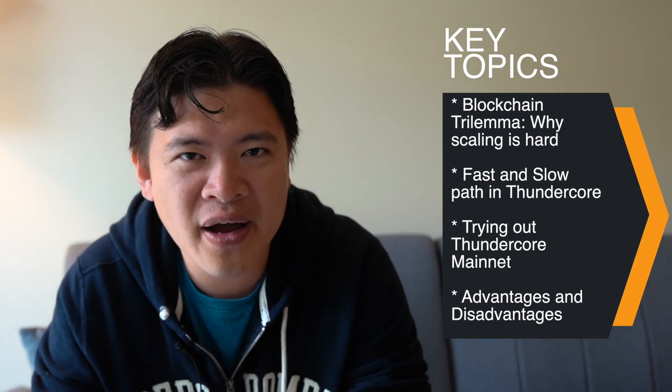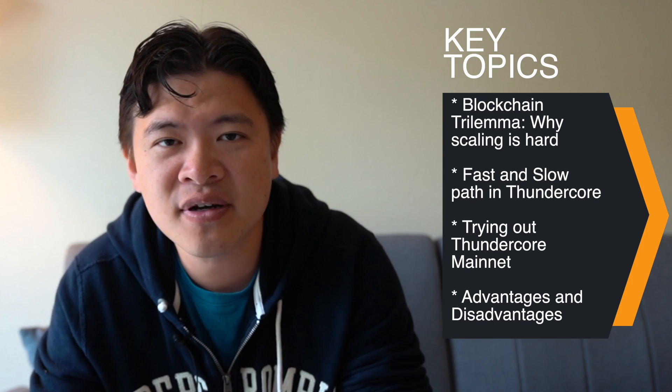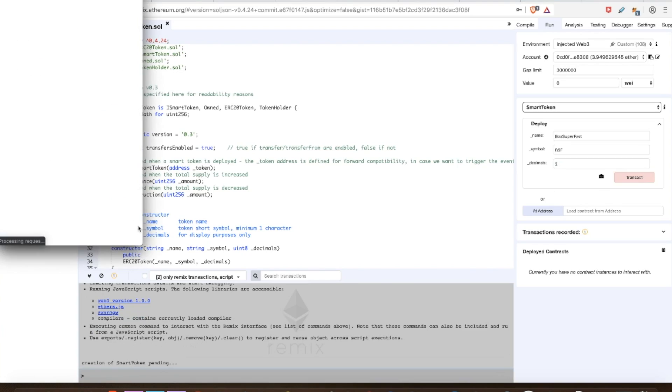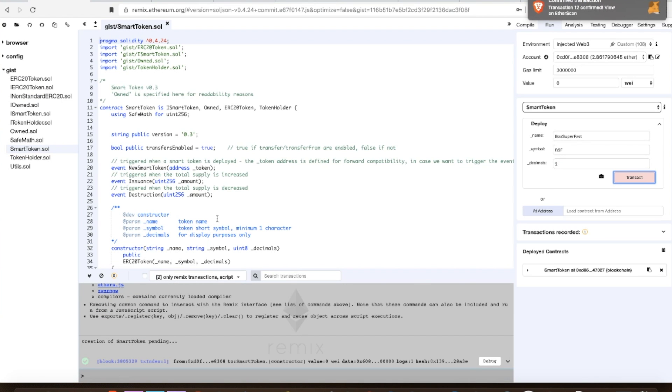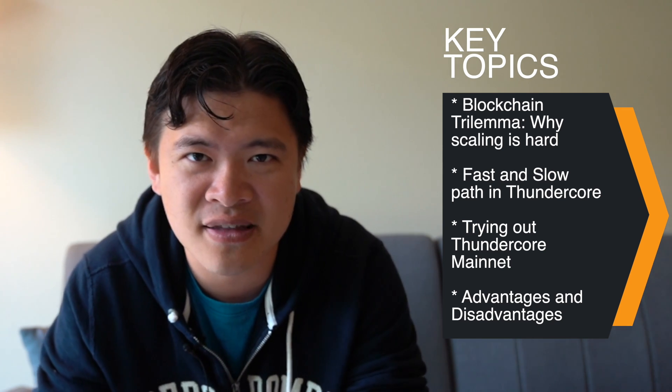In today's video, we're going to look at the theoretical reasons behind why scaling is so hard, and we're going to look at how ThunderCore solves this — what was their novel breakthrough technique. We're actually going to go down and test and use it, because I think that's probably the most important part. The best part about ThunderCore is that it's live right now on mainnet. Making this video was really fun — I got to go back to programming and learned a lot about the fundamentals of blockchain, reading academically published papers, which was much better than reading flimsy marketing schemes.